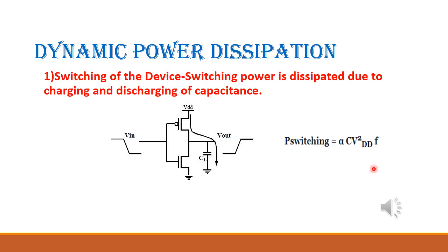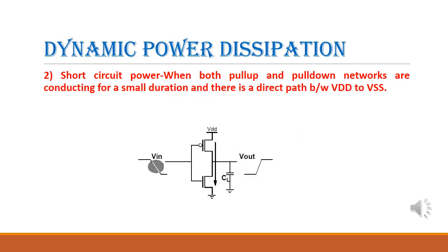This is the switching power formula, where alpha is the activity factor, C is the capacitance, VDD is the supply voltage, and f is the frequency. If we reduce these factors, the switching power can be reduced. The next cause for dynamic power dissipation is short circuit power. During a high-to-low transition, if the transition time is very long, both transistors will be on simultaneously, creating a direct path from supply to ground, causing short circuit power dissipation. Dynamic power dissipation is the sum of short circuit and switching power dissipation.